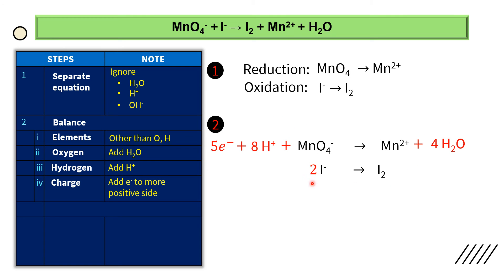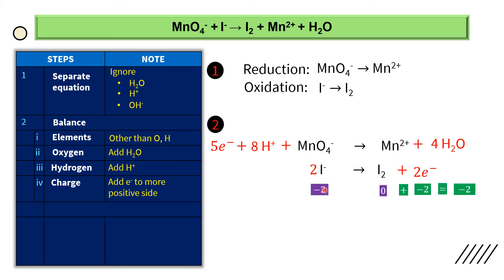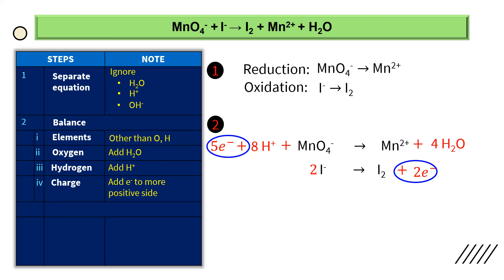For the second half equation: 2I⁻ has charge 2 × (−1) = −2. I2 has charge 1 × 0 = 0. Negative 2 on the left and 0 on the right — charge is not balanced. We add electrons to the more positive side, which is 0 (right side). We add 2 electrons, giving charge −2, so 0 + (−2) = −2 — charge is balanced. Important: electrons must be added on different sides — one equation has electrons on the left, the other on the right. Adding electrons on the same side in both equations is wrong.